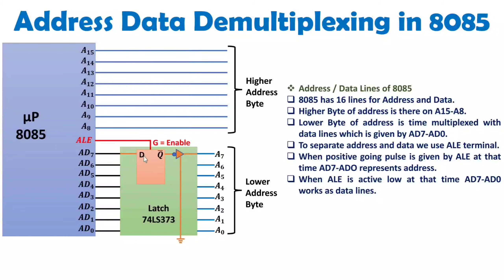Now let us understand how that is happening internally. A similar connection exists for all the lines, but I will show only one line connection. Inside, we have a D flip-flop. The AD7 line is connected to the D input, and the enable input is connected to ALE. When ALE is enabled, it transfers the D data to the output.